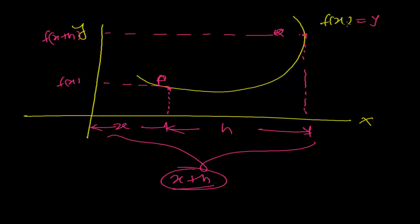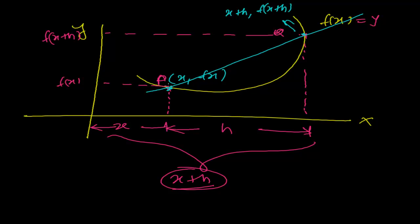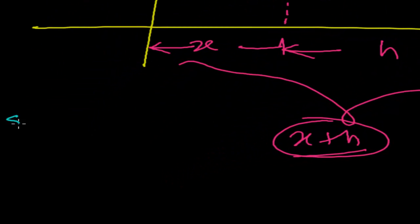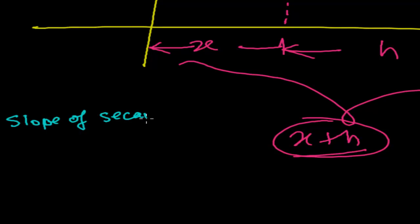So, the coordinates of point p are x comma f of x, and the coordinates of point q are x plus h comma f of x plus h. To find how this function is changing, we need to take a secant line passing through p and q. The slope of this secant tells us the rate of change of this function between points p and q.